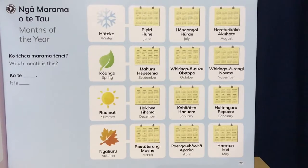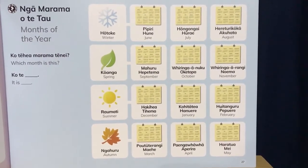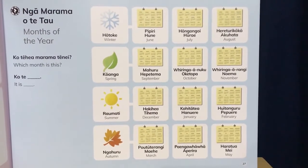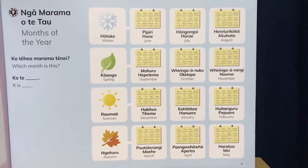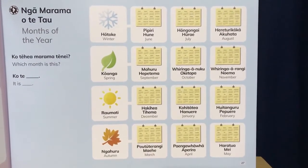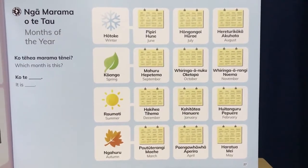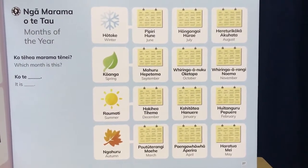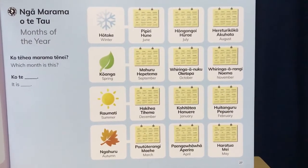We'll start with June: Pipiri and hūne. So you could practice those as well. For July: hōngōngoi and hūrai. Hōngōngoi looks like a mouthful but you just make a break after each of those vowels. Hōngōngoi, hōngōngoi. Hūrai.